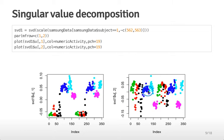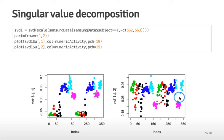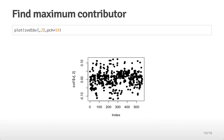Looking at the second left singular vector, which is orthogonal — uncorrelated — with the first, we can see that walking down and walking up are actually pretty well distinguished. This is a pattern in the data that explains a lot of variation and separates out categories that weren't separated by the max acceleration. As we covered in the SVD lecture, this left singular vector represents the average of potentially multiple patterns observed in the dataset, so we want to go back and identify which variables contribute to it.